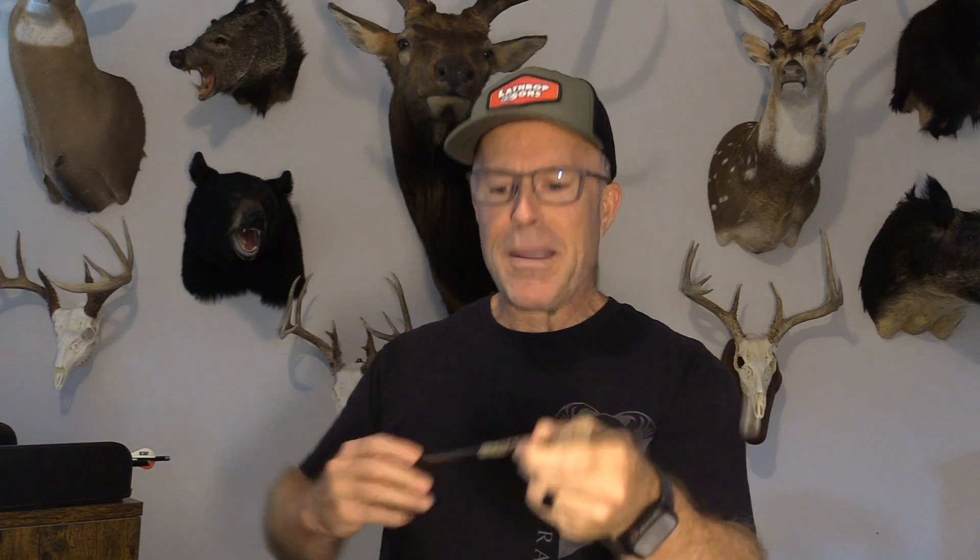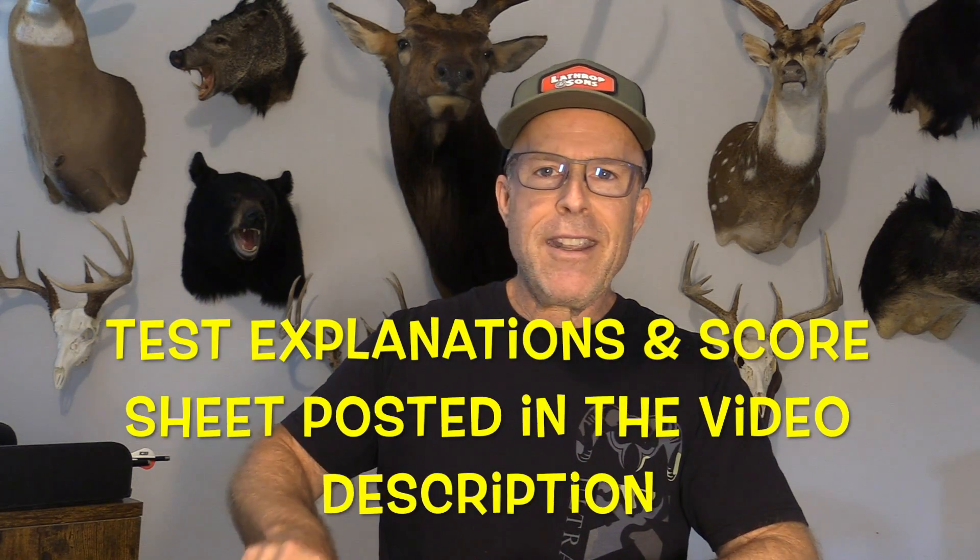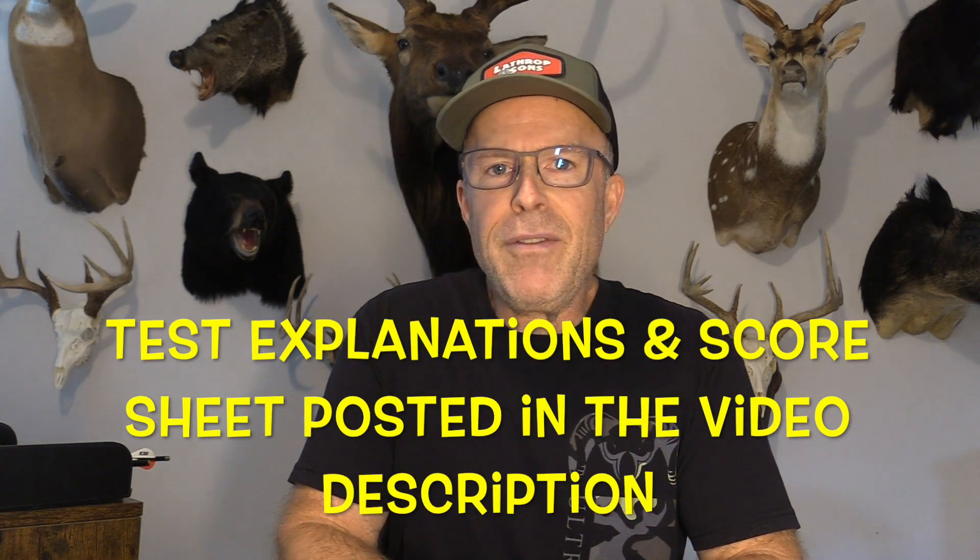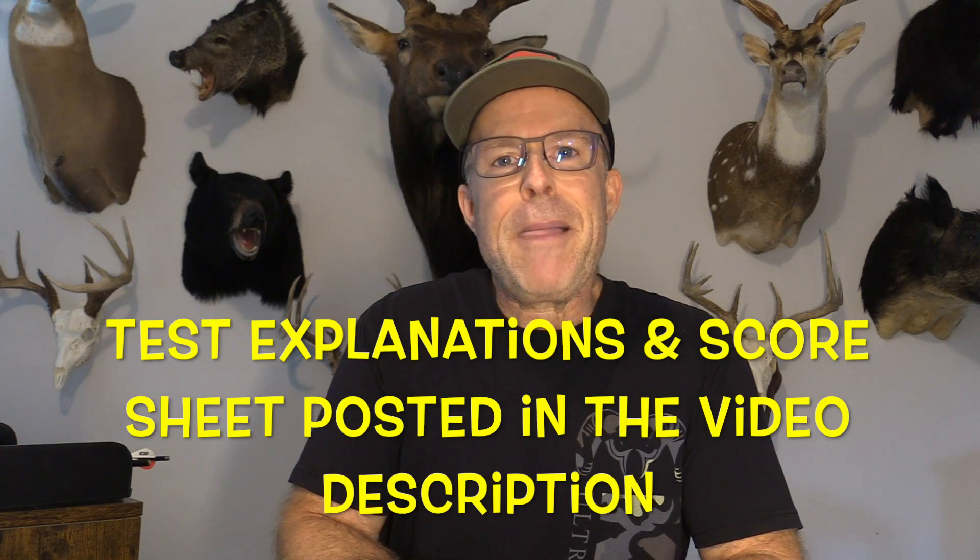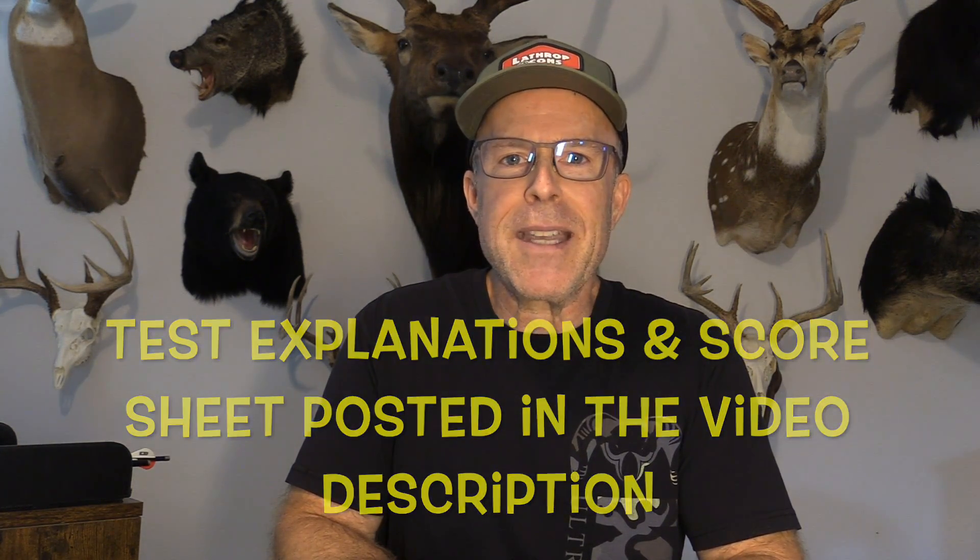Today I'm putting this one to the test using my Bowtech CP28 set at 72 pounds, 27-inch draw, and I'm using Bishop FOC King Arrows for most of the shots. For the really hard impact ones, I'm using the Bishop Fad Eliminators. All right, let's zoom in and check out some of the design features and specifications, then put this Zing Harvest to the test.